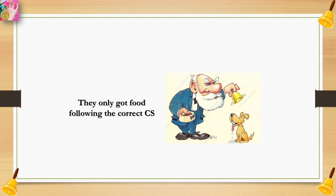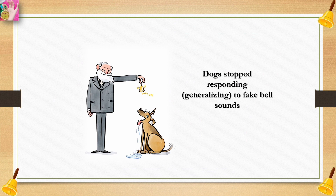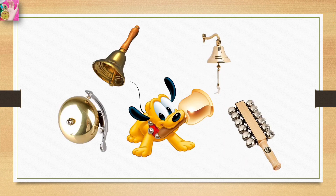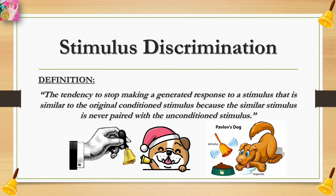Pavlov did not give the dogs food after the similar sound — they only got food following the correct conditioned stimulus. It didn't take long for the dogs to stop generalizing to the fake bell sounds, because the conditioned stimulus was always followed with food. They learned to tell the difference — to discriminate — between the fake bells and the real one. This process is called stimulus discrimination. Stimulus discrimination is the tendency to stop making a generalized response to a stimulus similar to the original conditioned stimulus, because the similar stimulus is never paired with the unconditioned stimulus. It occurs when an organism learns to respond to different stimuli in different ways.